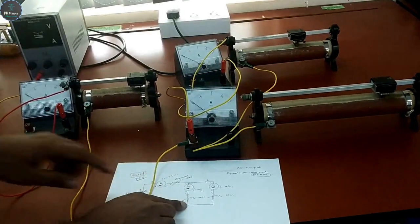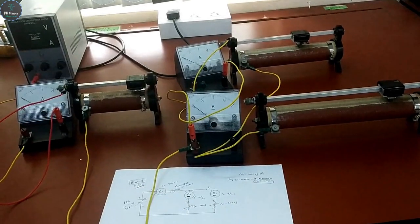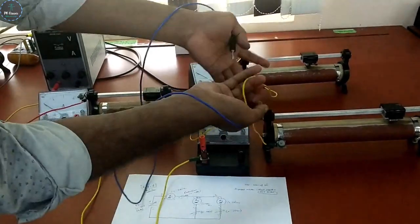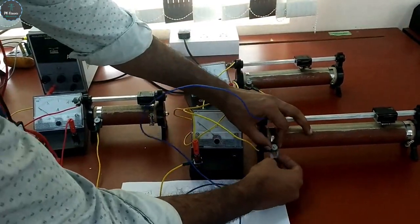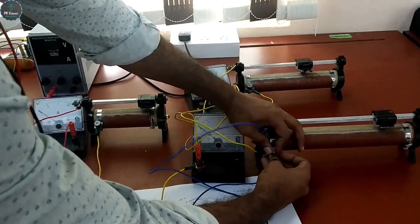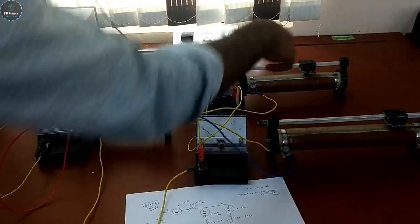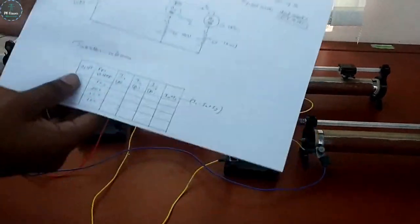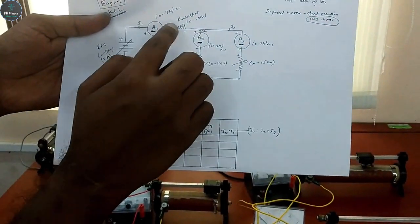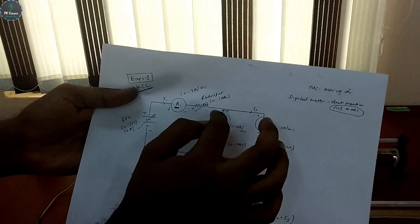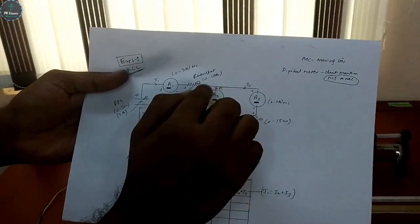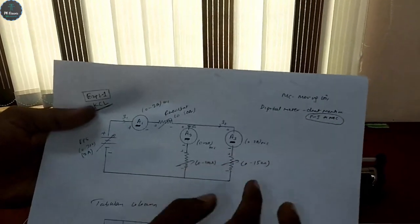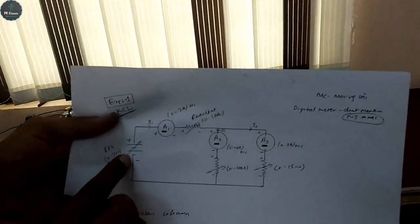From the shorted negative points, any one connects to the RPS negative. To summarize the connection: RPS positive to ammeter 1 positive; ammeter 1 negative to rheostat 1 positive; the parallel branches each have their ammeter positives shorted; each ammeter negative connects to its rheostat positive; all rheostat negatives are shorted and connected to RPS negative. Ammeter 3 negative also connects to the positive of its rheostat. The circuit is now correct and complete — you can conduct the experiment.